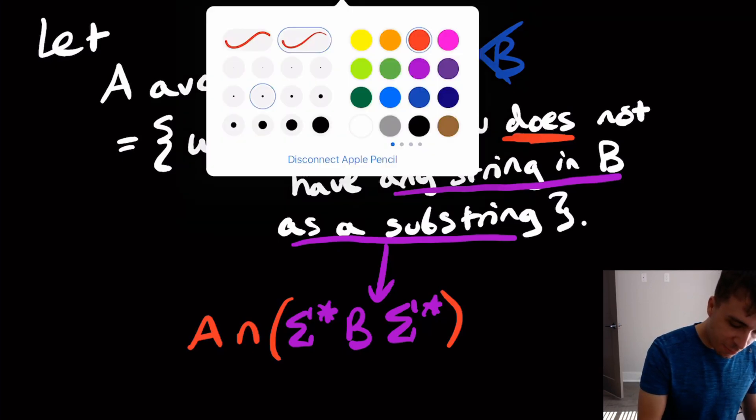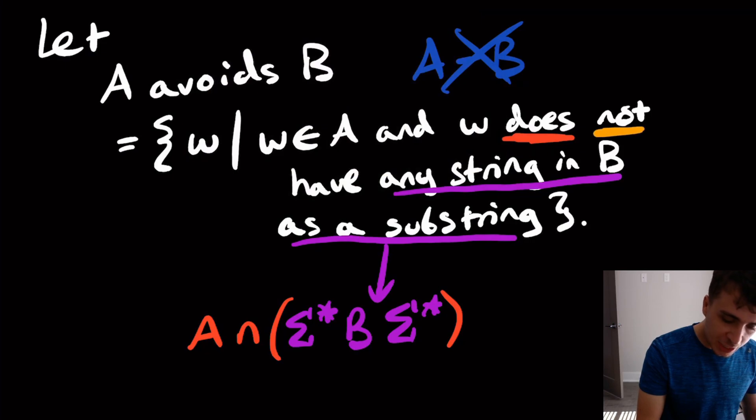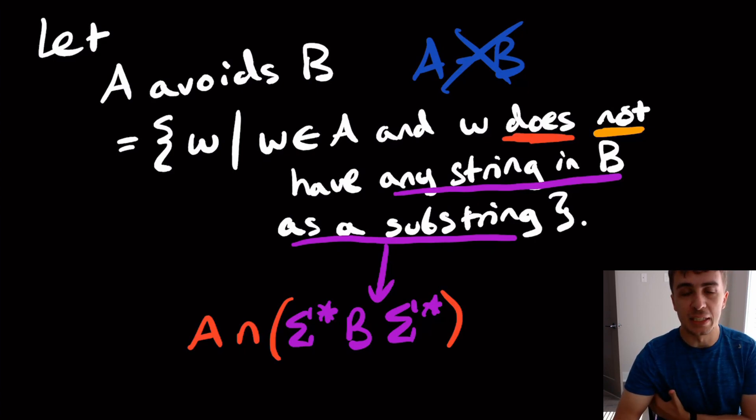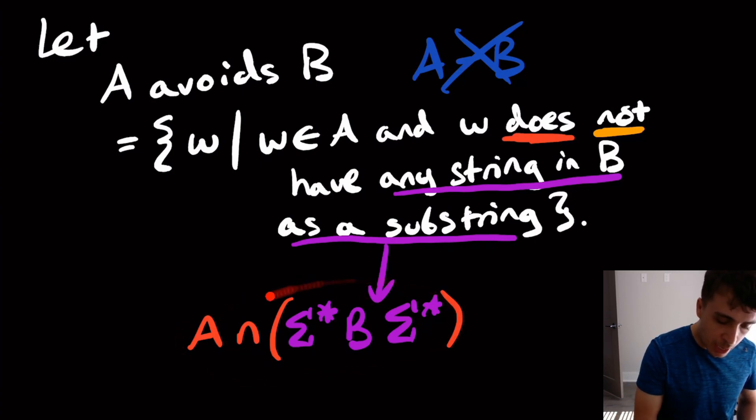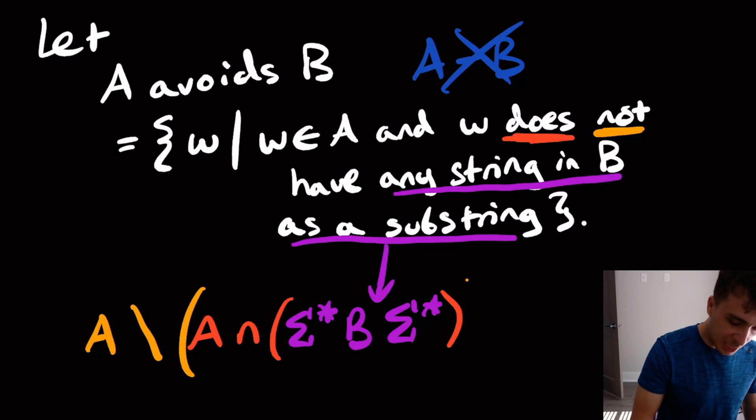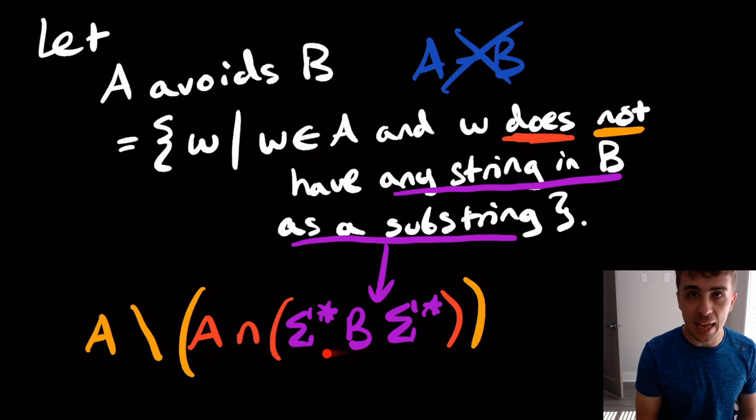And how do we get the final bit where it does not have any string in B? Well, we still have to have all the strings in A that do not fulfill this property. So this would be A set minus this thing. So it's everything in A take away all of the strings that have some substring as being a string in B. So everything in A that does have something in B as a substring. And why would we want to phrase it this way?